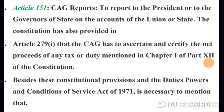Article 279 says that the CAG has to ascertain and certify the net proceeds of any tax or duty mentioned in Chapter 1 of Part 12 of the Constitution. The proceeds of taxes or duties are also mentioned. Besides these constitutional provisions and duties, the CAG's powers and conditions of service are governed by the Act of 1971.